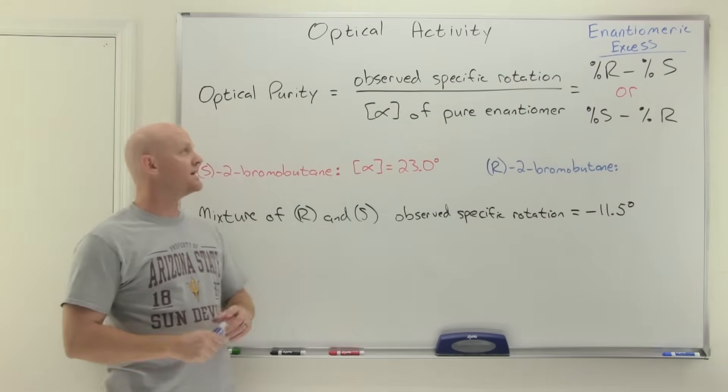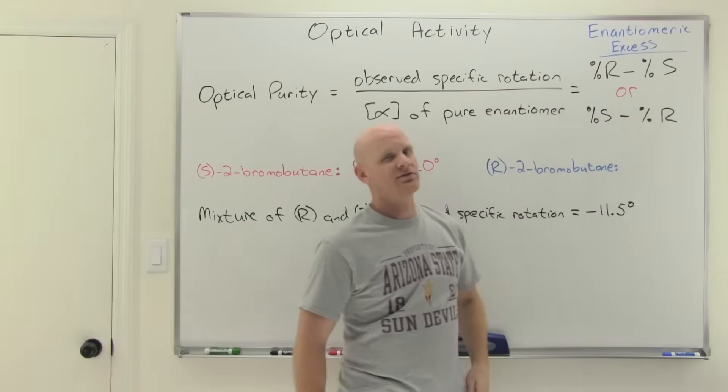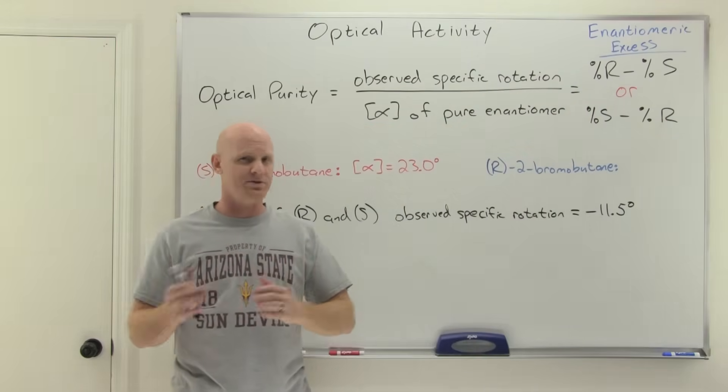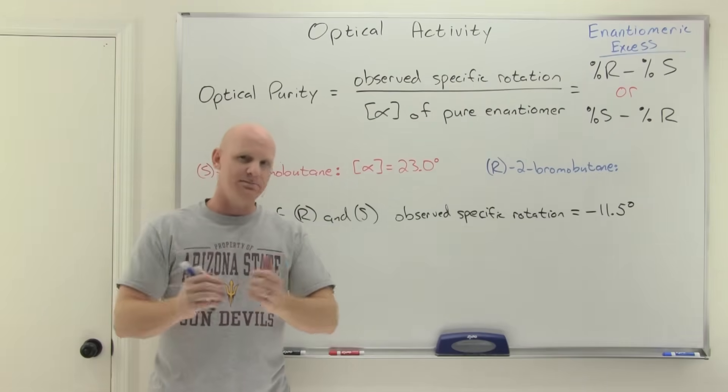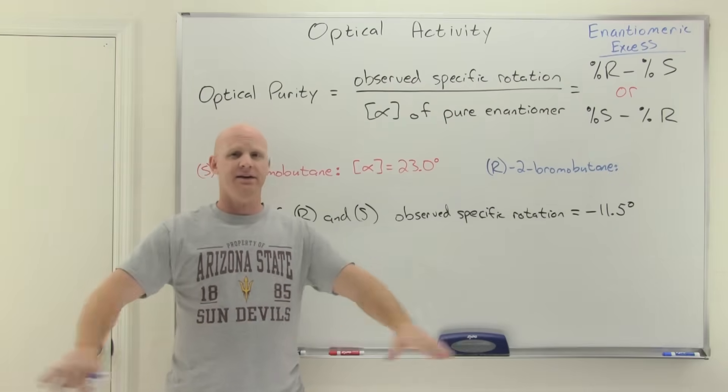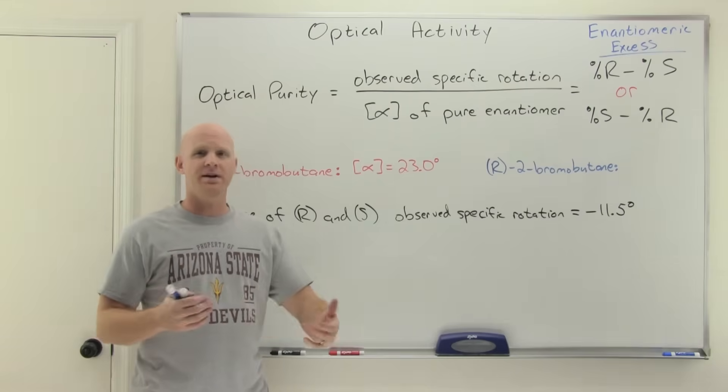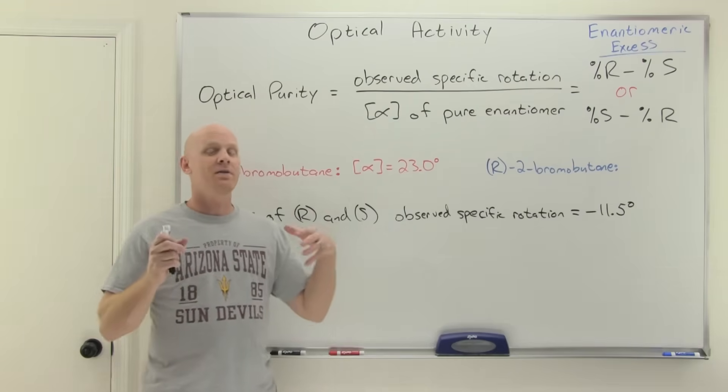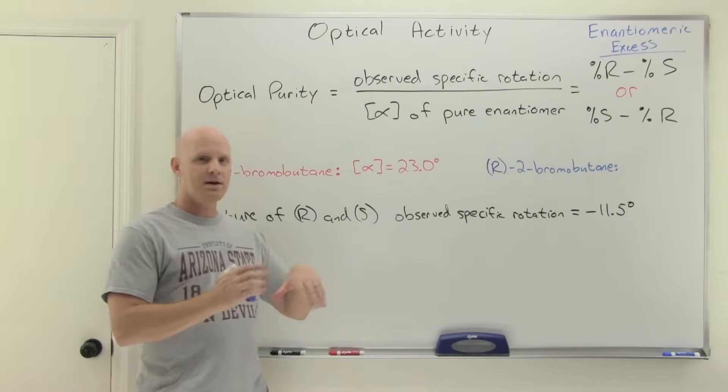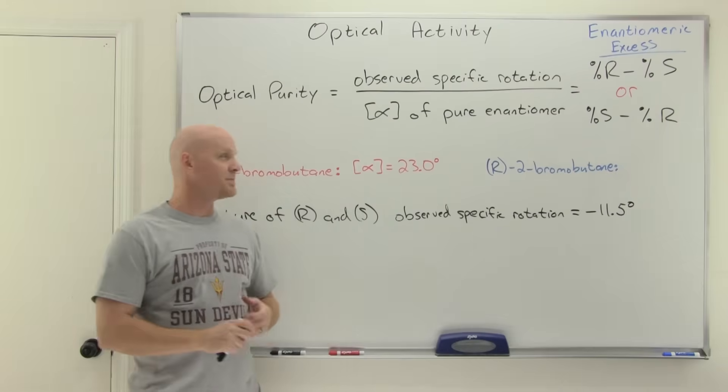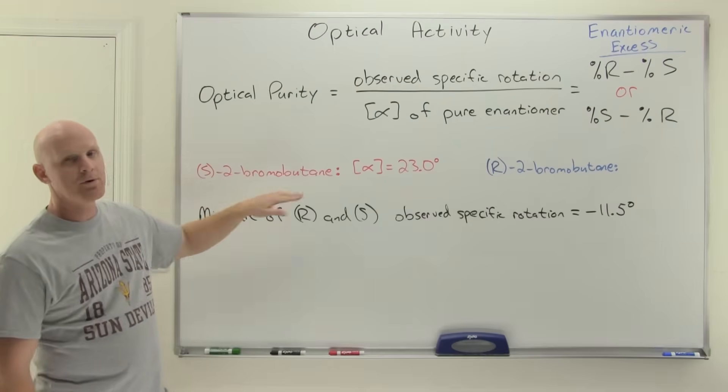Alright. So last little section in this lesson. We're talking about optical purity and enantiomeric excess. So this is when you've got both R and S enantiomers, a pair of enantiomers mixed together. Now, if they're mixed together exactly 50-50, that's a racemic mixture and it's going to be optically inactive. But now we're going to treat with, well, what do you do if it's not exactly 50-50? What if it's 51-49? What if it's 75-25? Then that solution will be optically active.